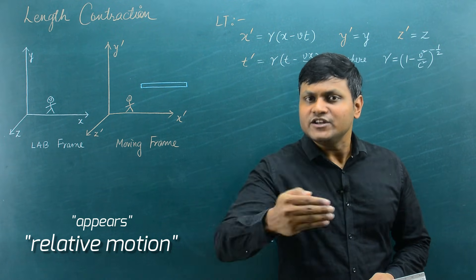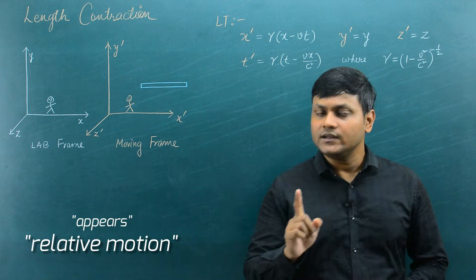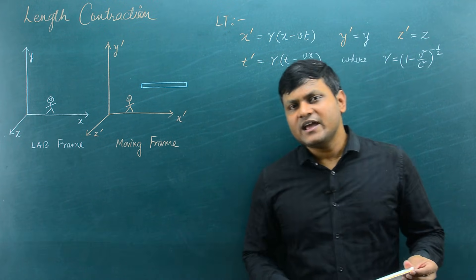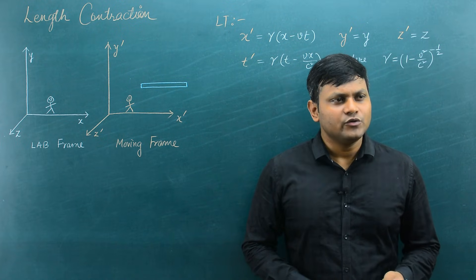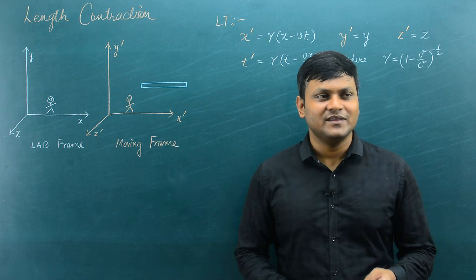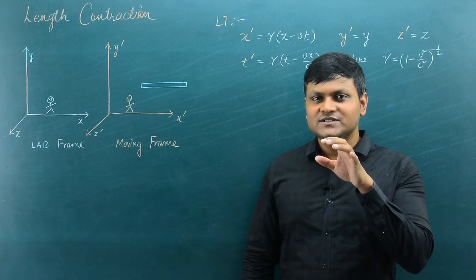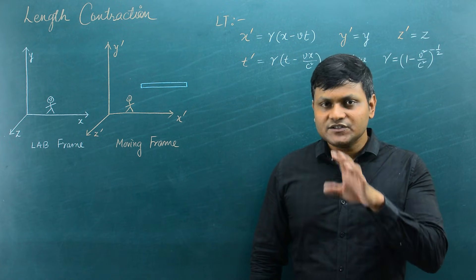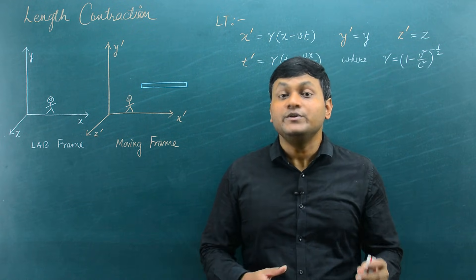If you are not in relative motion — that means if you are at rest with respect to the object — then you will not measure any kind of length contraction. Many times students ask me: is length contraction real or is it some kind of an optical illusion? You see, I feel why students get confused with this kind of idea. Because first of all, you have to understand that this is not any optical illusion.